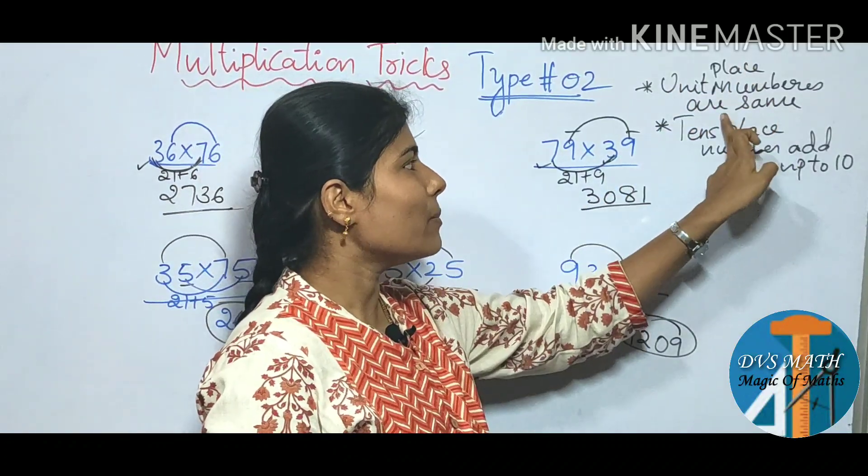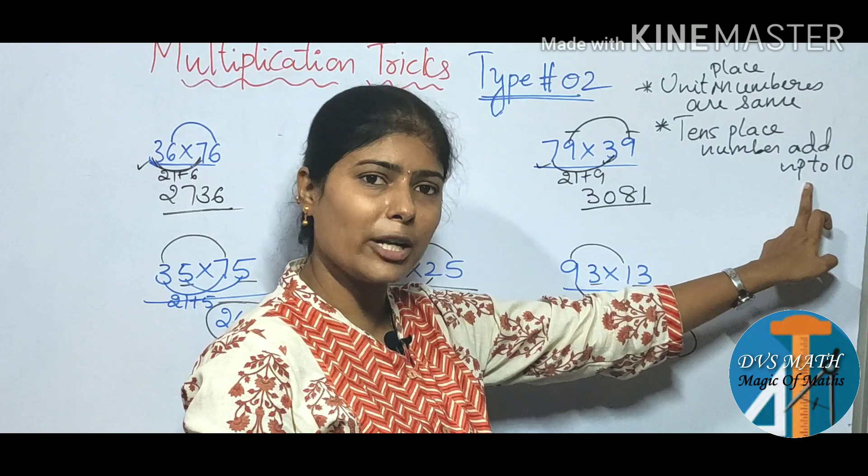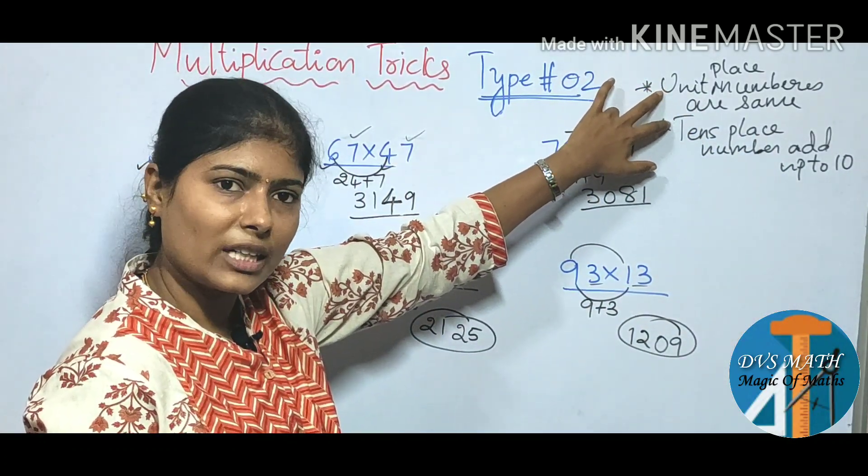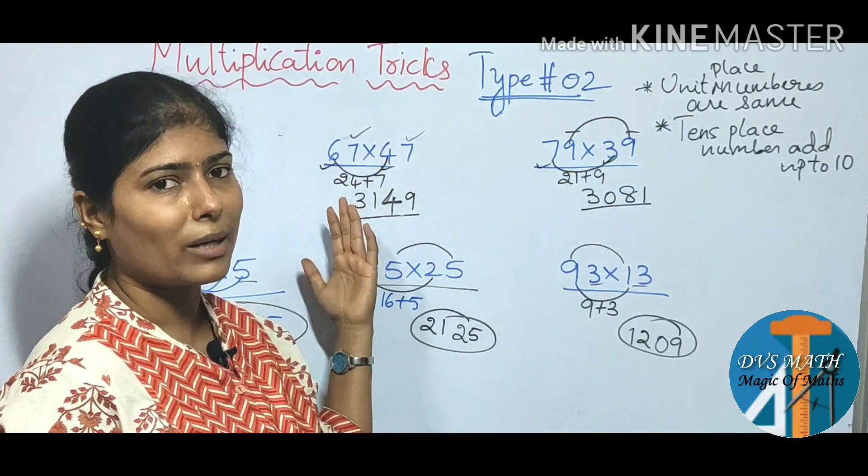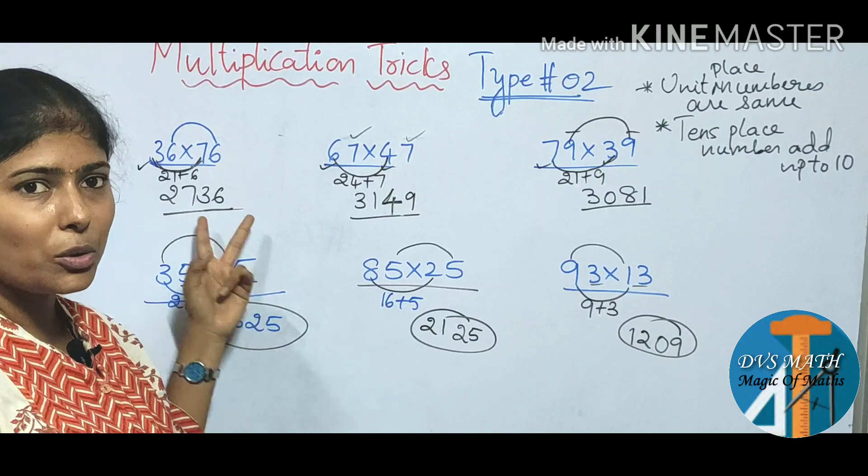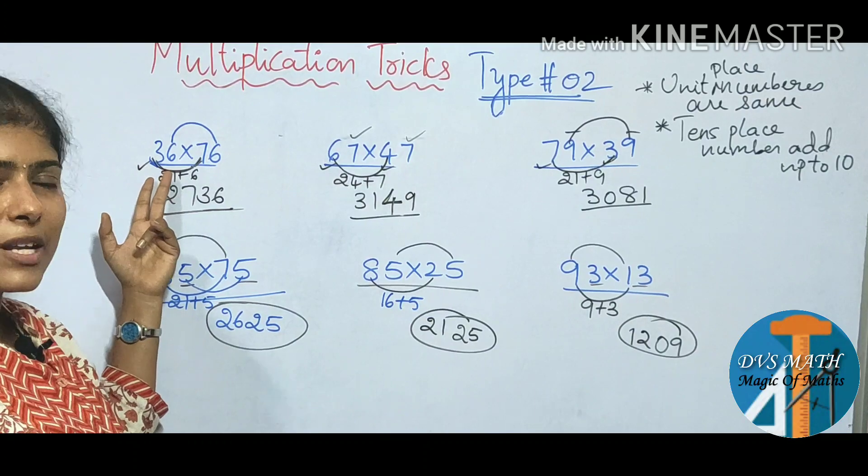Observe these numbers. Rule is unit place numbers same. 10s place two numbers add, 3 10. So this condition apply. You multiply unit place direct. 10 place multiply, unit place same numbers.